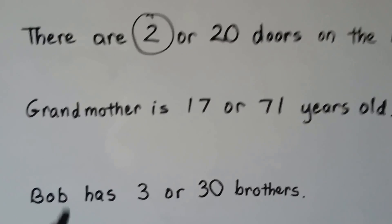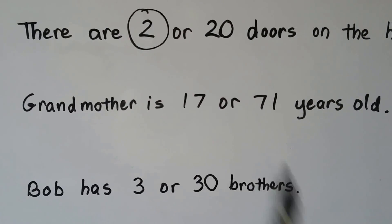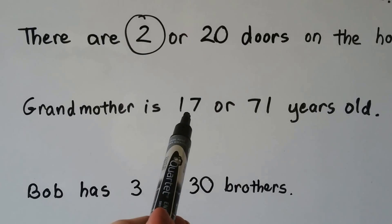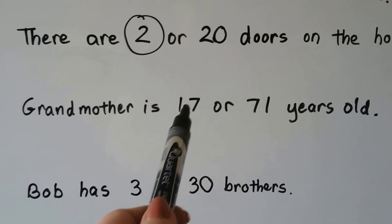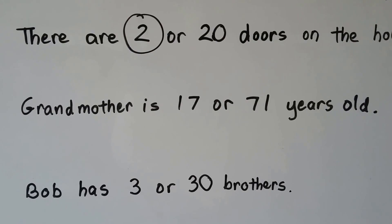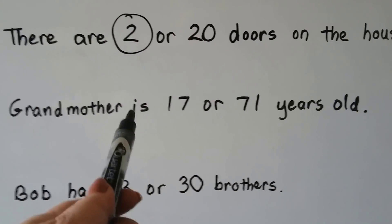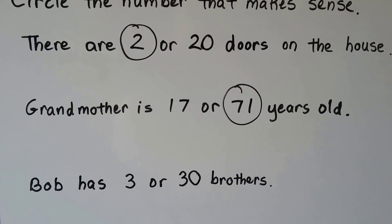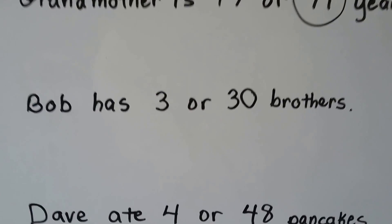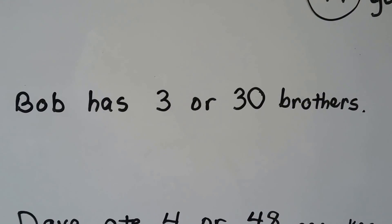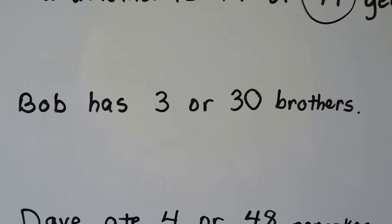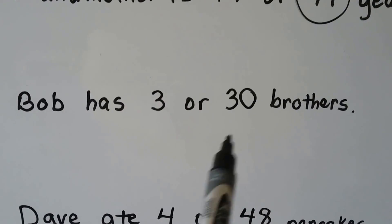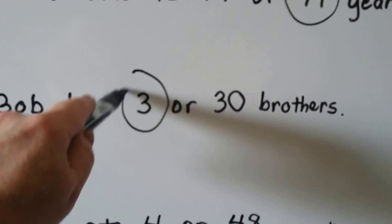Grandmother is 17 or 71 years old. Well, 17 means she's a teenager — would a grandmother be a teenager? That doesn't make sense. Grandmother is 71 years old makes more sense. Bob has three or 30 brothers — three brothers would make more sense than 30 brothers.